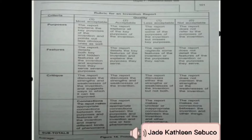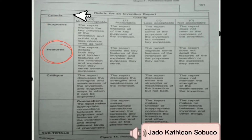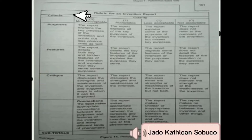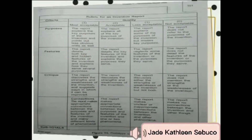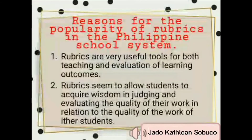This figure shown here is a prototype of rubric scoring. As you can see, this rubric lists the criteria in the column on the left — first, the purpose of the invention; second, the features or parts of the invention and how they serve its purpose; third, the pros and cons of the design; and fourth, how the design connects to other things past, present, and future. The four columns to the right describe varying degrees of quality: most acceptable, acceptable, less acceptable, and not acceptable.